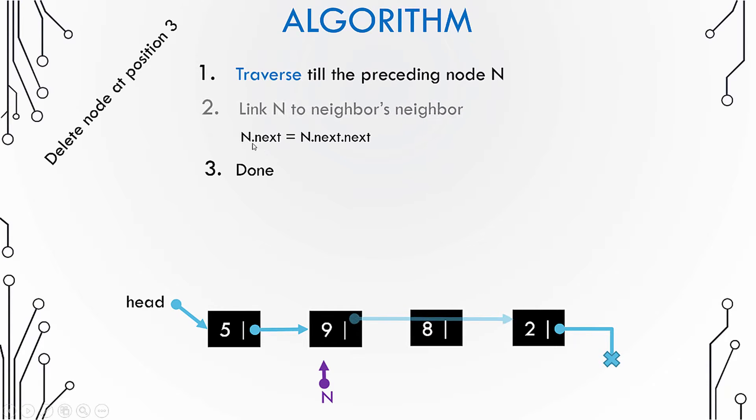If the preceding node is n, then you can say that n.next is equal to n.next.next, which essentially means that the next pointer of the node n, in this case this node n with the value 9, is equal to the next of the next node.